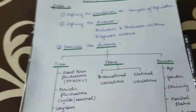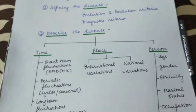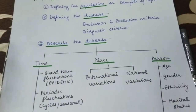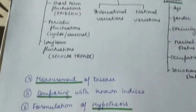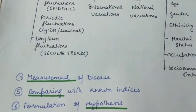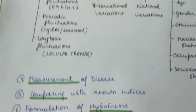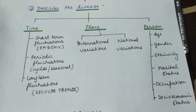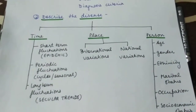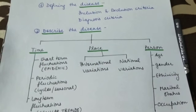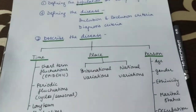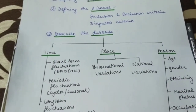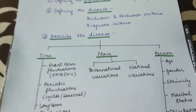To summarize, the six steps of descriptive epidemiology are: first, define the population; second, define the disease; third, describe the disease; fourth, measurement of disease; fifth, comparing with known indices; and sixth, formulation of hypothesis. The third step — describing the disease in terms of time, place, and person — is the most important. Please like, subscribe, and comment. Notes are also available on the Instagram page linked in the bio.